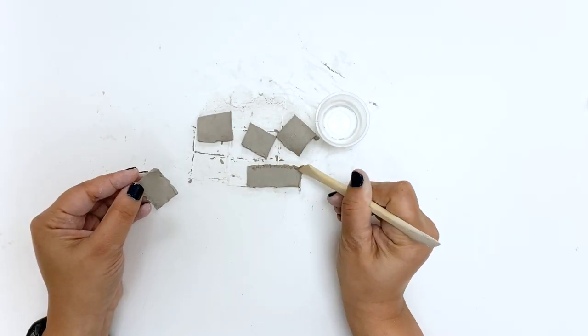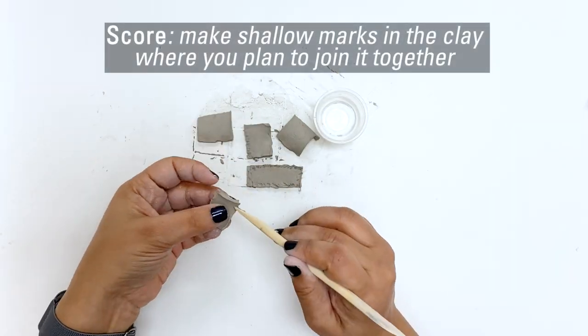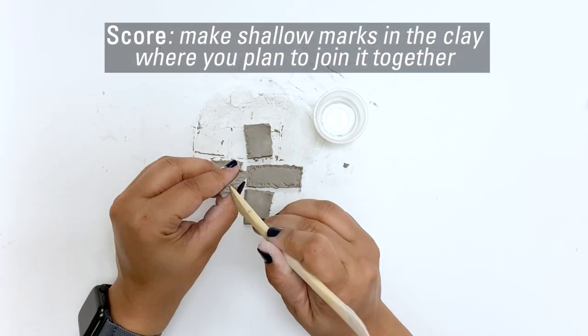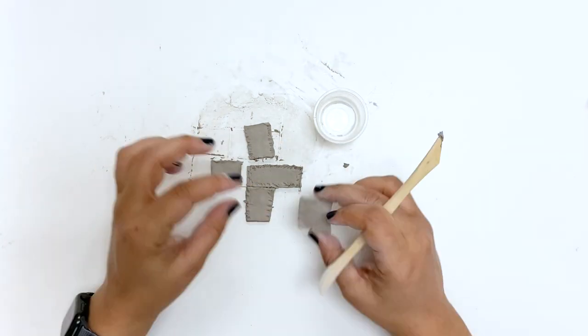This step, scoring, making shallow markings along the edges of your piece, will help stick them together. I'm doing them all at once, but you can do them one by one.